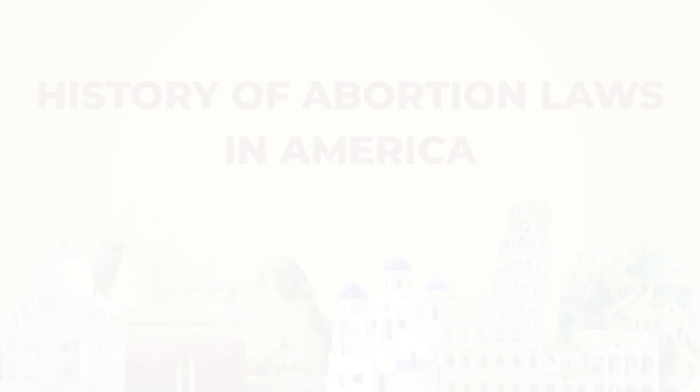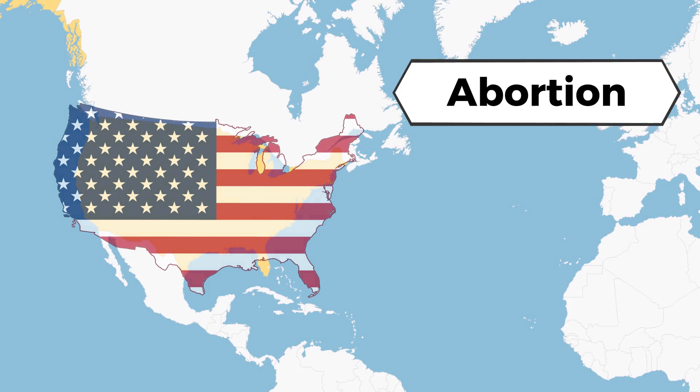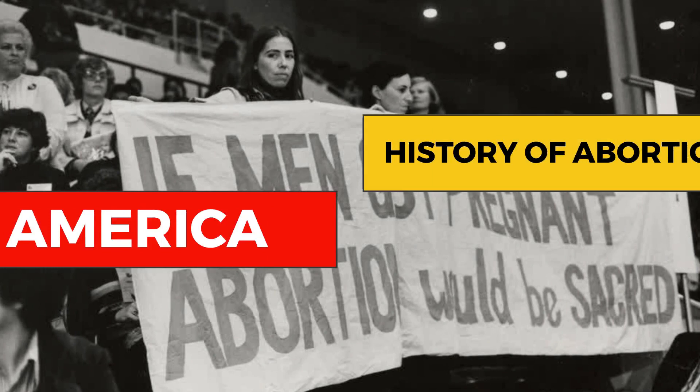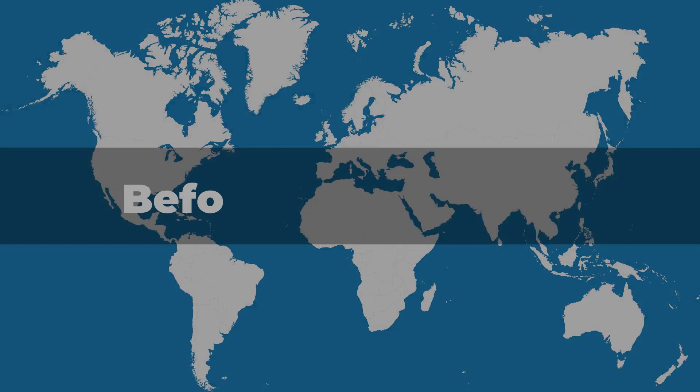In the United States, abortion has raised ethical, legal, and political issues in recent decades. The battle over abortion burst out once more on June 24th, 2022, when the U.S. Supreme Court abolished the constitutional right to abortion. This video presents the complicated history of abortion rights and law in America.